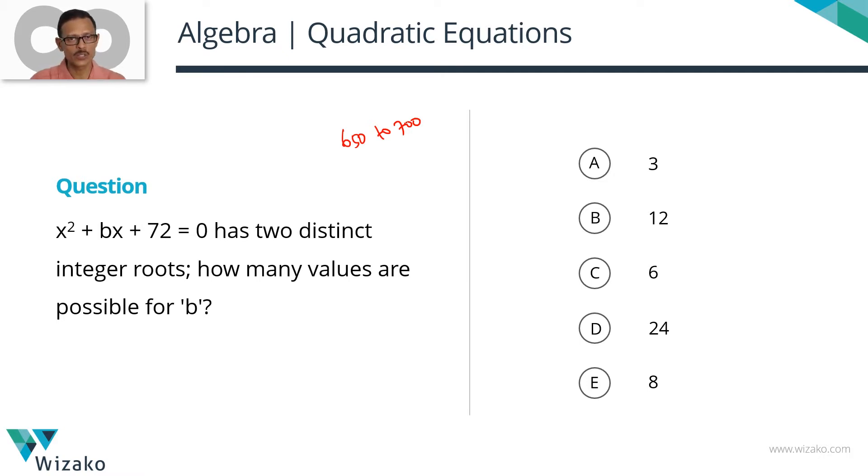Let's get started. We'll be solving this question in two ways. Once we apply this core idea, there are two ways to proceed. One, by actually listing down possibilities because we need to find possible values for b. The second one is, if you know some number property concepts, we can use that and reduce the number of steps to get to the answer. We'll solve it in both ways.